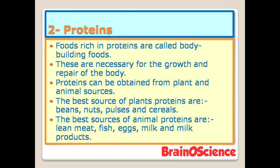The second nutrient is proteins. Food rich in proteins is called body-building food. Proteins are the building blocks of the body; they help in growth and repair of damaged tissues. These are necessary for the growth and repair of the body. Proteins can be obtained from plant and animal sources. The best plant protein sources are beans, nuts, pulses, and cereals. The best animal protein sources are lean meat, fish, eggs, milk, and milk products.